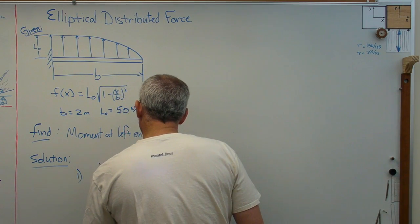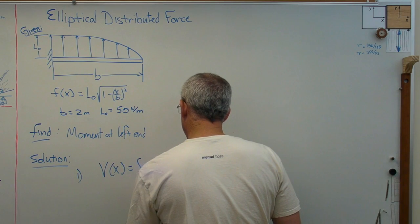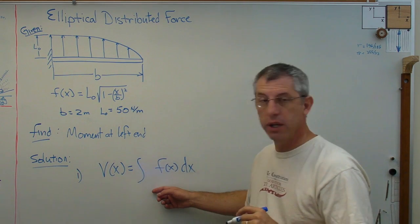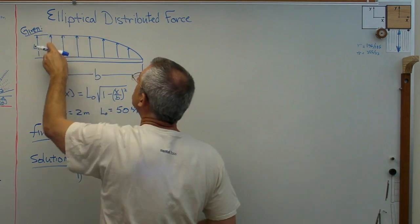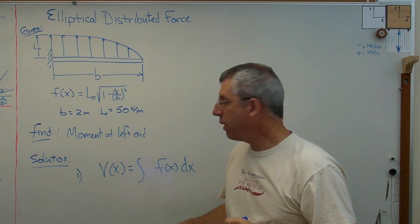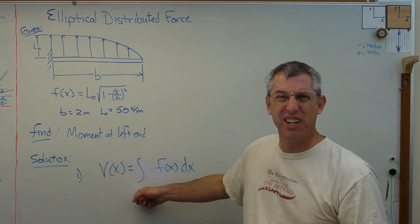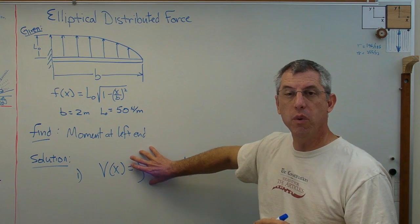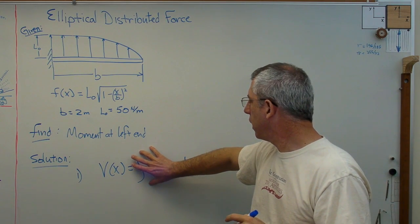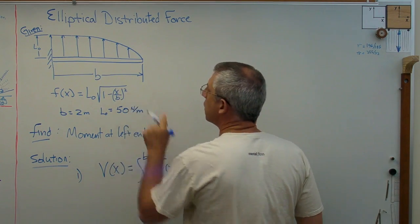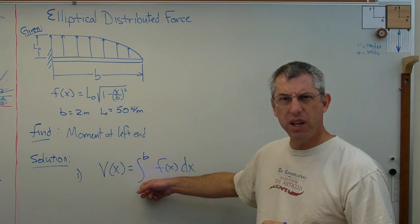V of x equals the integral of f of x. All we're doing here is we're dividing this up into a bunch of little boxes of height f of x and width of dx, and we're adding them all up. Integration is just kind of really expensive adding. The only real question here is what do we want our endpoints to be on our integral? It's pretty obvious. This one better be b because that's where you run out of wing. But what do you put down here?